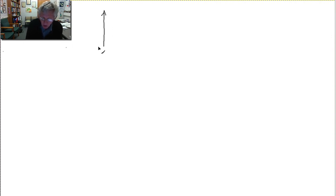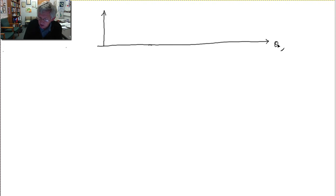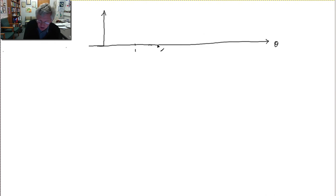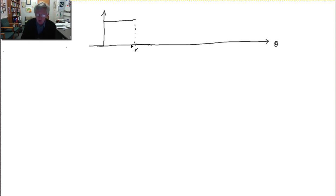Let's think about what happens when we're sampling from a uniform distribution on 0 to theta. I'm going to draw a graph where I imagine the parameter theta varies. If theta was 1, then the density would look like this: it's 0 outside the interval 0 to 1, and it's equal to 1 between 0 and 1, so that I have a total area of 1.